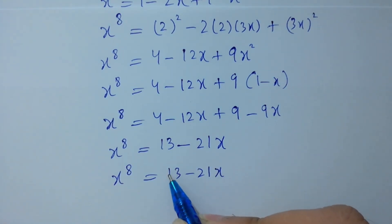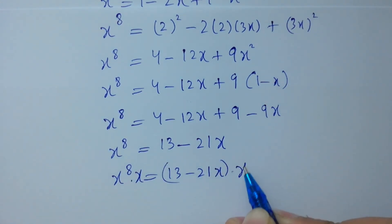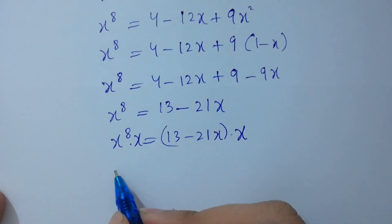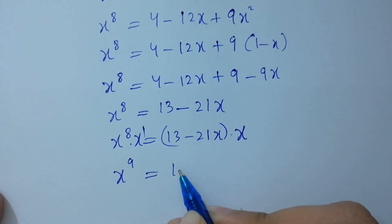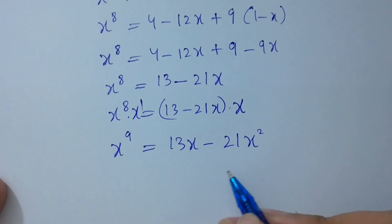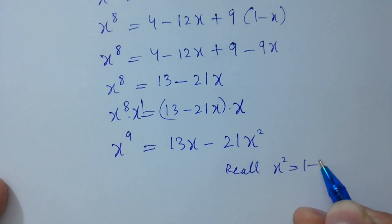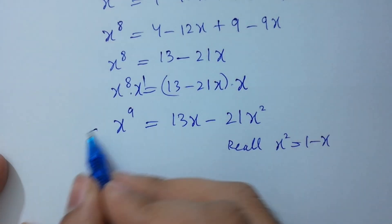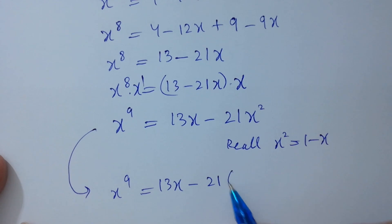To get x to the power 9, I am going to multiply by x on both sides. So x to the power 9 equals 13x minus 21x squared. Recalling x squared equals 1 minus x, we substitute that in.